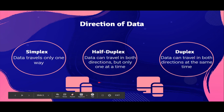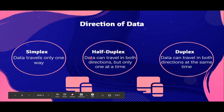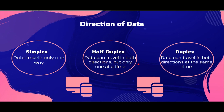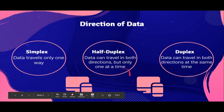When we are supposed to represent simplex in a diagram, you have to draw an arrow from the first device to the second device. A simplex example is sending a signal from your desktop to your printer. Half duplex is when data can travel in both directions, but only one direction at a time. An example of this is walkie talkies.